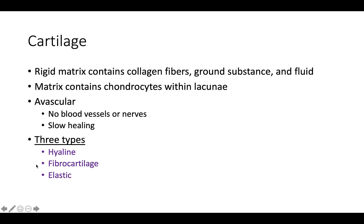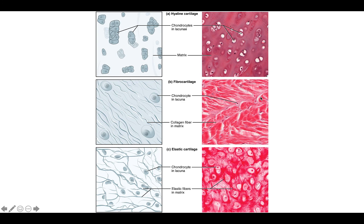There are three different types of cartilage: hyaline, fibrocartilage, and elastic. Hyaline looks like frosted glass — it covers your joints, connects your ribs to your sternum, surrounds your trachea, and supports the external nose. It's very flexible and kind of looks like fish-eyed soup.